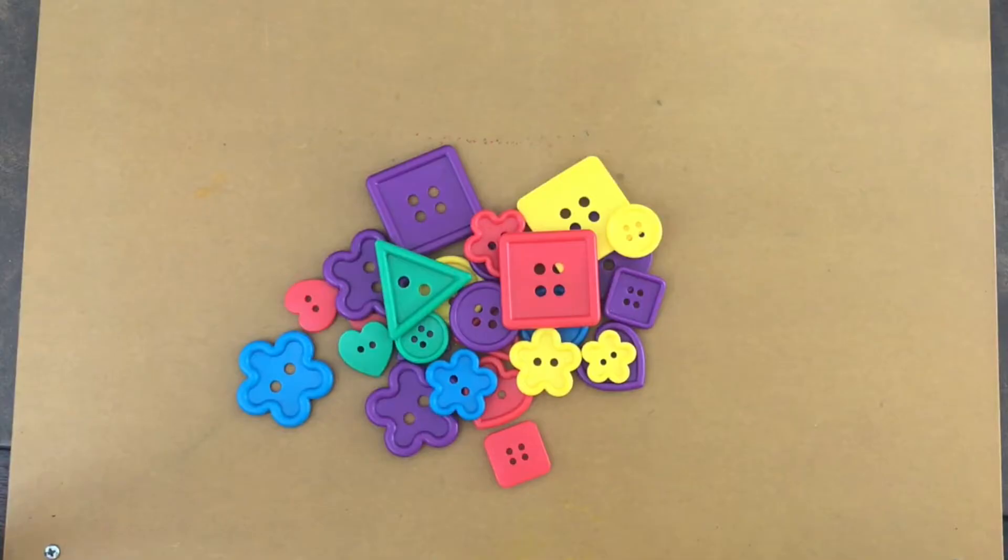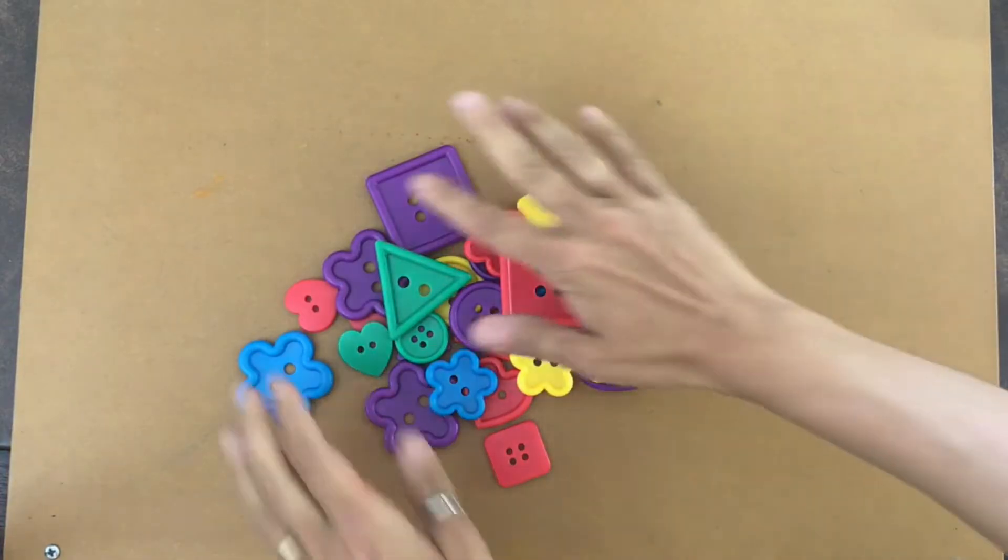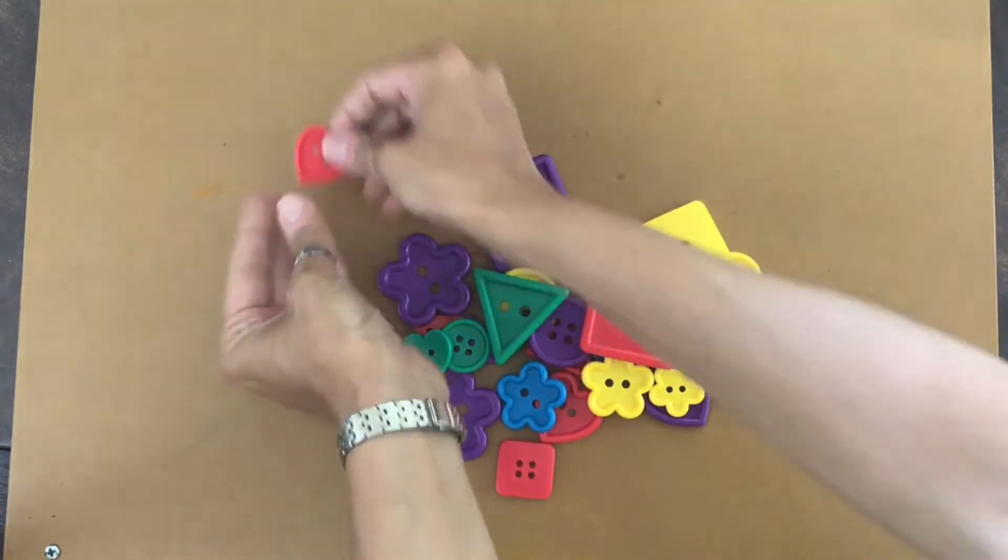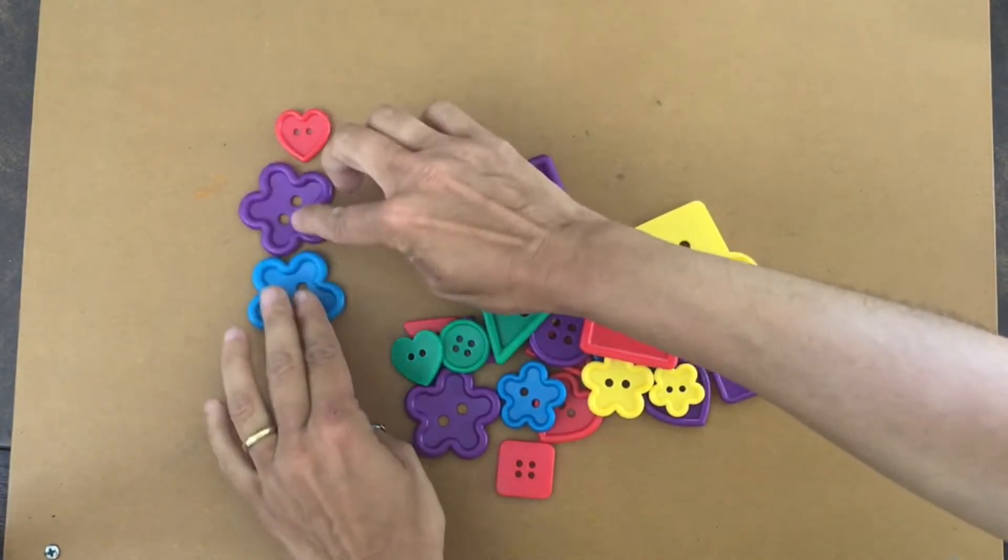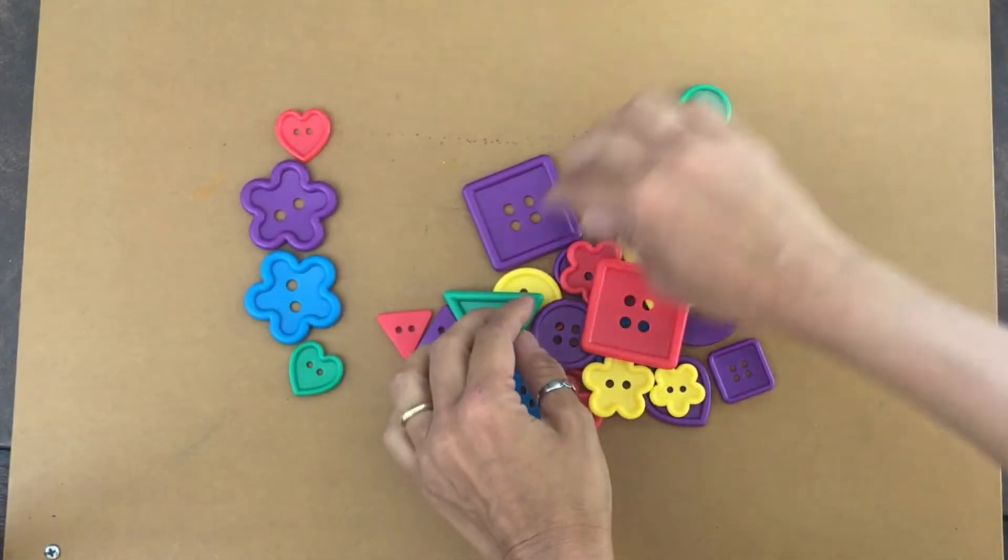As many ways as we can, first I think I'm gonna sort them by how many have two holes and how many have four holes. So I'm gonna put the two holes on this side and the four holes on this side.